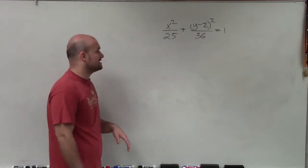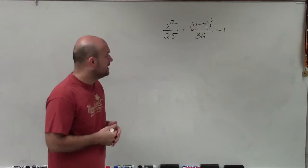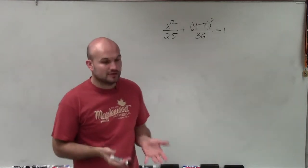Welcome. So in this case, what I have is x squared divided by 25 plus y minus 2 squared divided by 36 equals 1. And what I want to do is show you how to graph the equation of the ellipse.